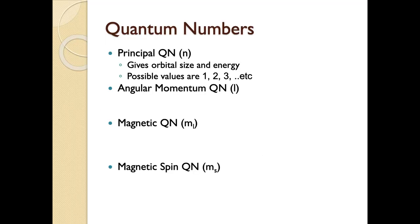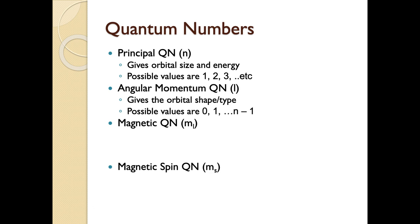Our next quantum number, the angular momentum quantum number l, tells us the orbital shape or orbital type we're looking at. Its possible values start at zero and go up to n minus 1. So if n equals 1, the only value l can have is zero, because 1 minus 1 is zero. In general, l starts at zero and its maximum is whatever n is minus 1.